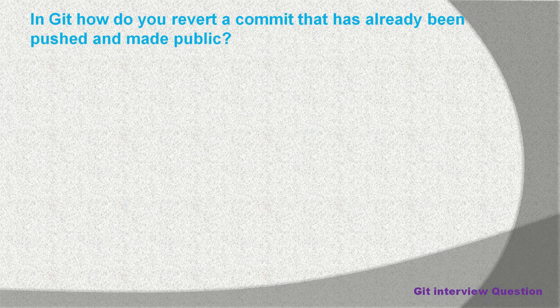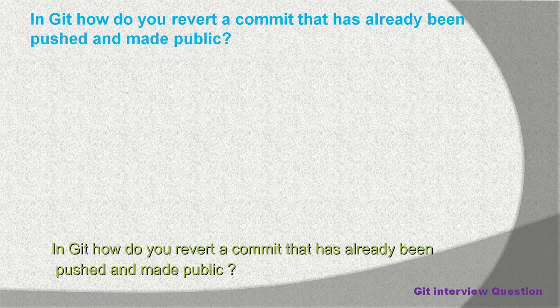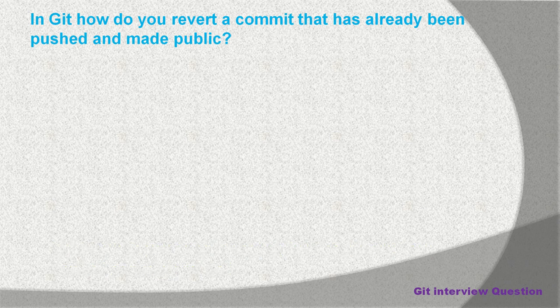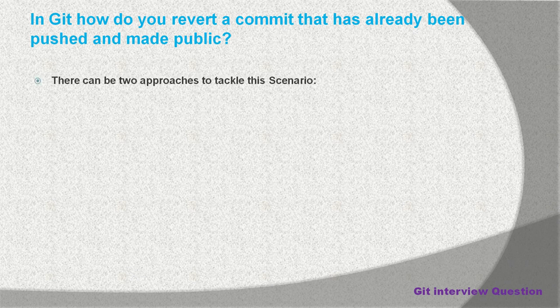In Git, how do you revert a commit that has already been pushed and made public? You made some local changes, committed those changes to your local repository, then pushed your changes to the remote repository where they became publicly available for every developer who is part of the project. If you feel that commit was bad and you want to revert it, how can you do that? There are two approaches depending on the situation.